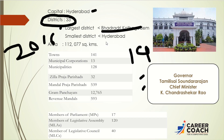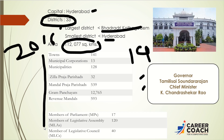The largest district is Bhadradri Kothagudem and the smallest district is Hyderabad. The total area of Telangana state is 1,12,077 square kilometers. Statistical figures: 141 towns, 13 municipal corporations, 128 municipalities, 32 Zilla Praja Parishads, 513 Mandal Praja Parishads, 12,765 Gram Panchayats, 593 revenue mandals, 17 MPs, 120 MLAs, and 40 MLCs.